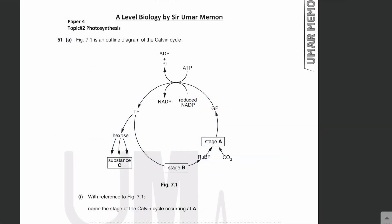Assalamu alaikum everyone. In this video lecture we will be discussing paper 4 topical past papers of the chapter photosynthesis, which is a topic of A2 level biology 9700. Let's start. Question 51 part A: figure 7.1 is an outline diagram of the Calvin cycle.